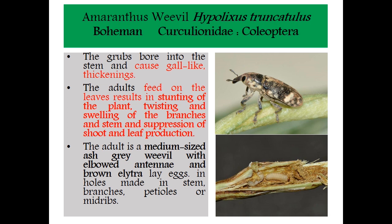First one is Amaranthus Weevil, Hypolixus truncatulus, Family Curculionidae, Order Coleoptera. Here the grub bores into the stem and causes gall-like thickenings. The adult feeds on the leaves resulting in stunting of plants, twisting and swelling of branches and stem, and suppression of shoot and leaf production. The adult is a medium-sized ashy gray weevil with elbowed antennae, laying eggs in holes made in the stem, branches, petioles, or mid ribs.